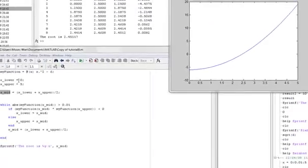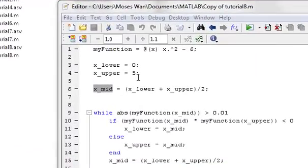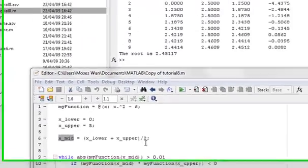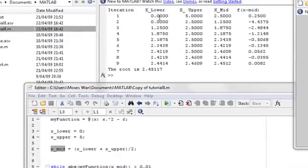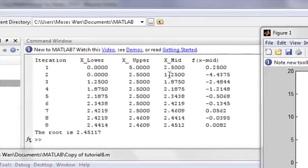We've made our lower limit 0, our upper limit to 5. And, we've evaluated the midpoint. So, our lower limit is 0, our upper limit is 5. And, we've found the point in between, which is 2.5.